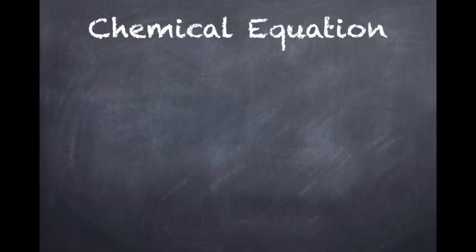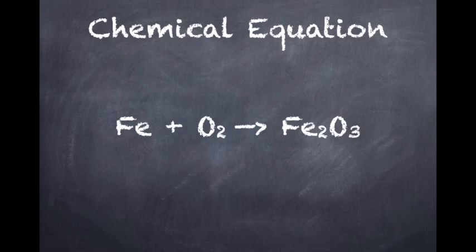The chemical equation reads Fe plus O2 reacts to produce Fe2O3, where Fe is the iron, O2 is the oxygen, and Fe2O3 is the iron oxide.